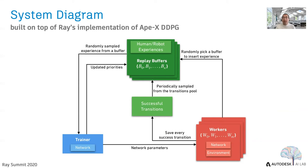During training, each virtual robot interacts with its own environment to collect data. Once a successful episode occurs, it is saved in storage. Each buffer periodically and independently samples one successful transition from storage and saves it in the demonstration zone in their buffer, so human demonstrations are gradually replaced by robot demonstrations. We build our system on top of Ray's implementation of APEX DDPG.